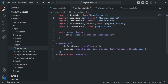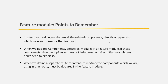Now we have created a separate feature module for auth related things. Here are some important points to remember when working with feature modules: First, in a feature module, declare all related components, directives, and pipes for that feature. Second, if those components or directives are not used outside the module, you don't need to export them. Third, when you define a separate route for a feature module, the components used in that route must be declared in the feature module. This is all from this lecture.